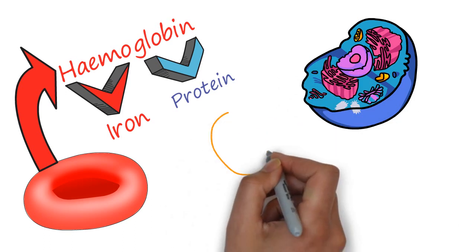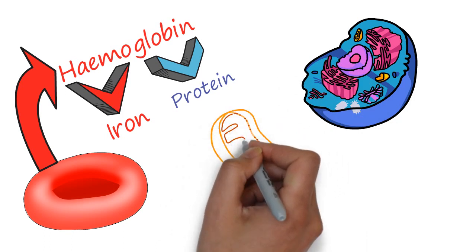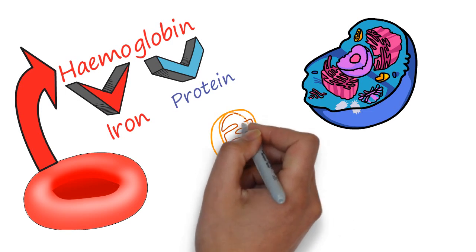Without the mitochondria, the RBC cannot utilize oxygen to produce ATP, that means adenosine triphosphate.